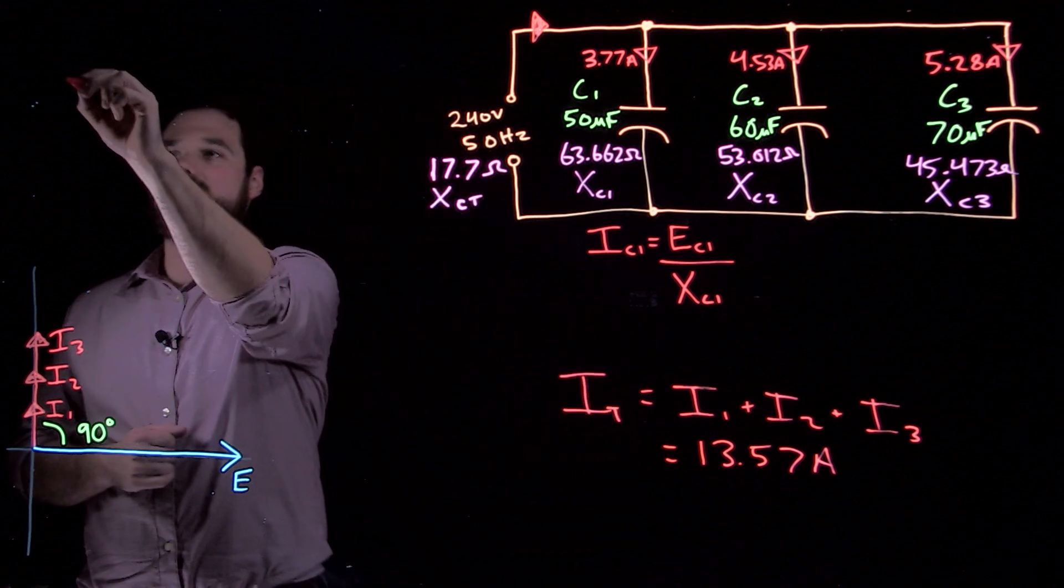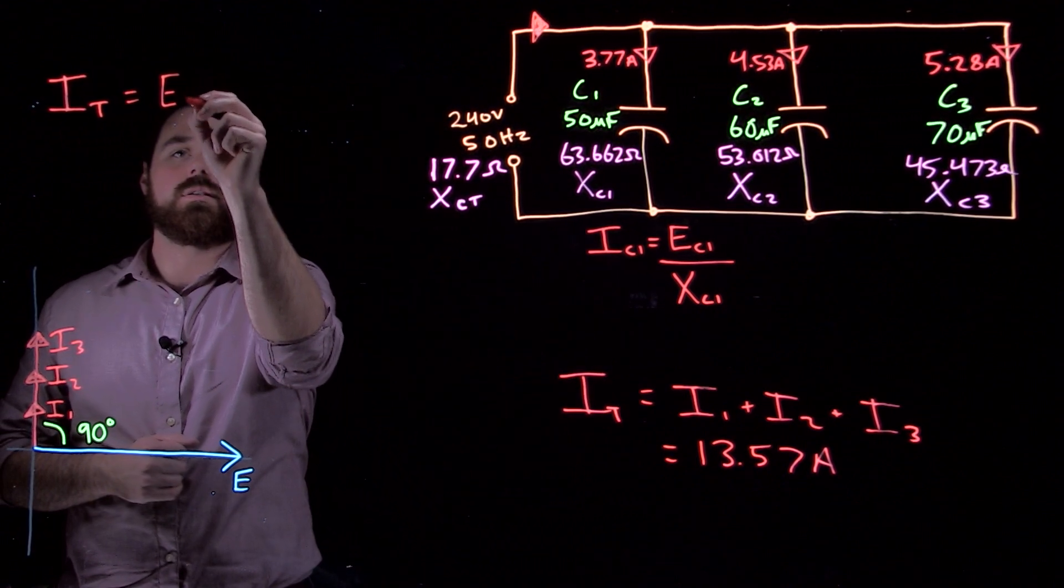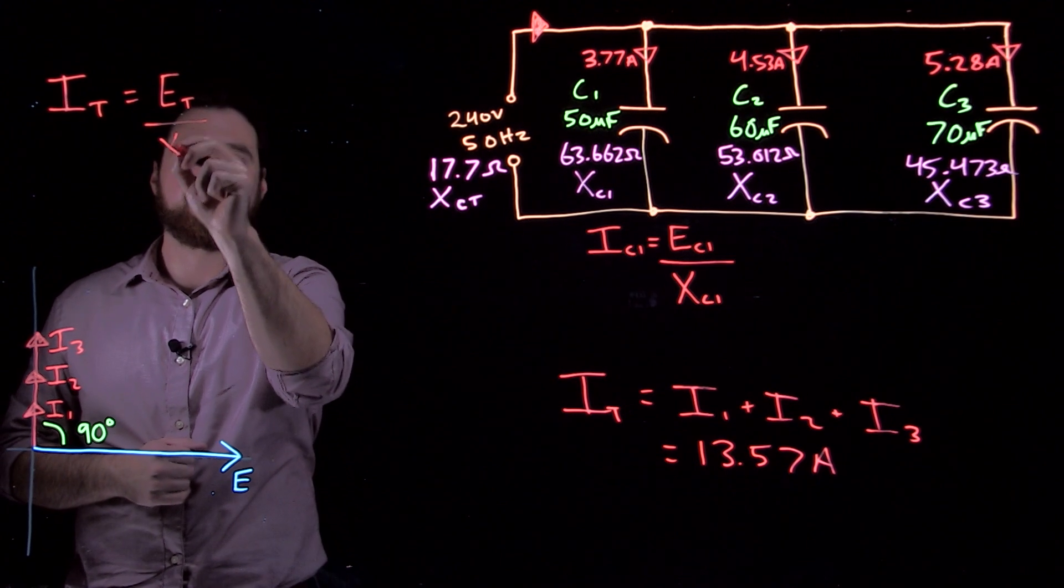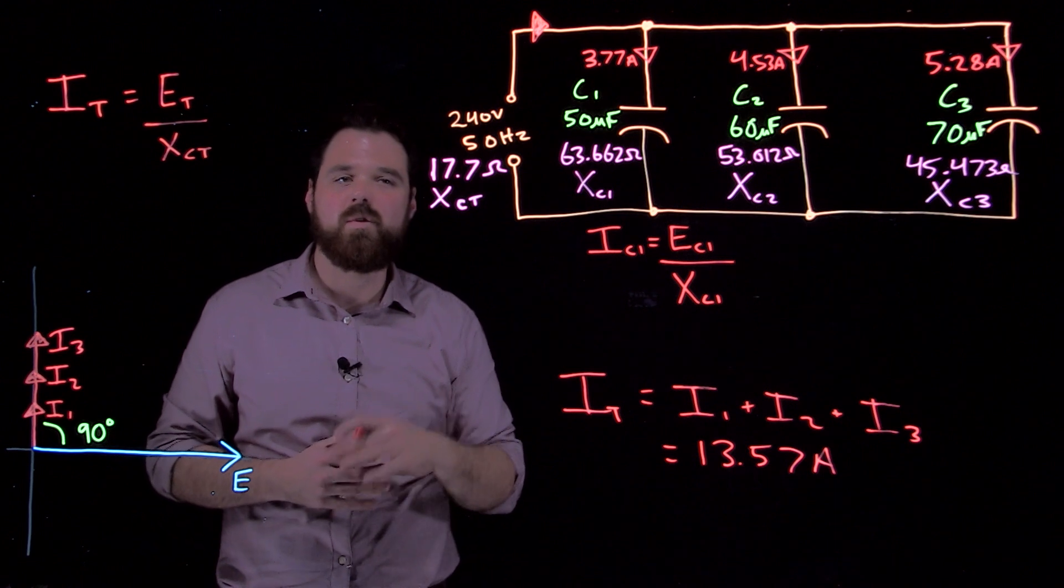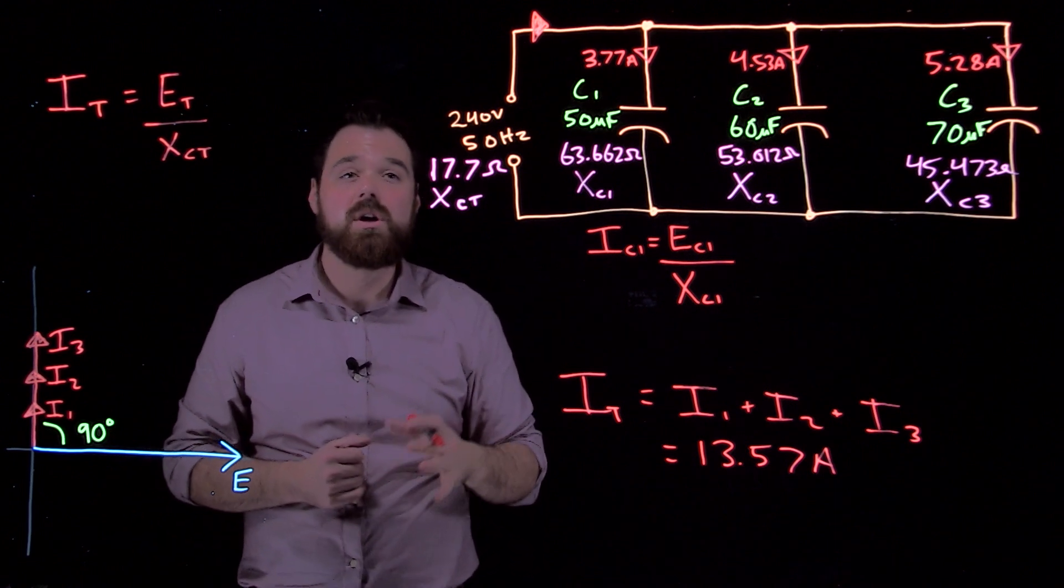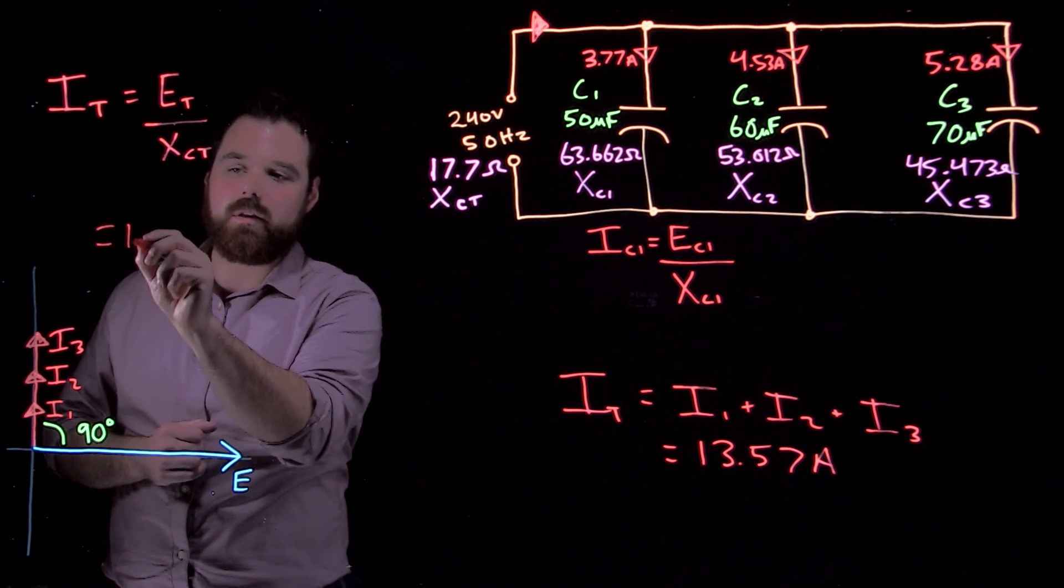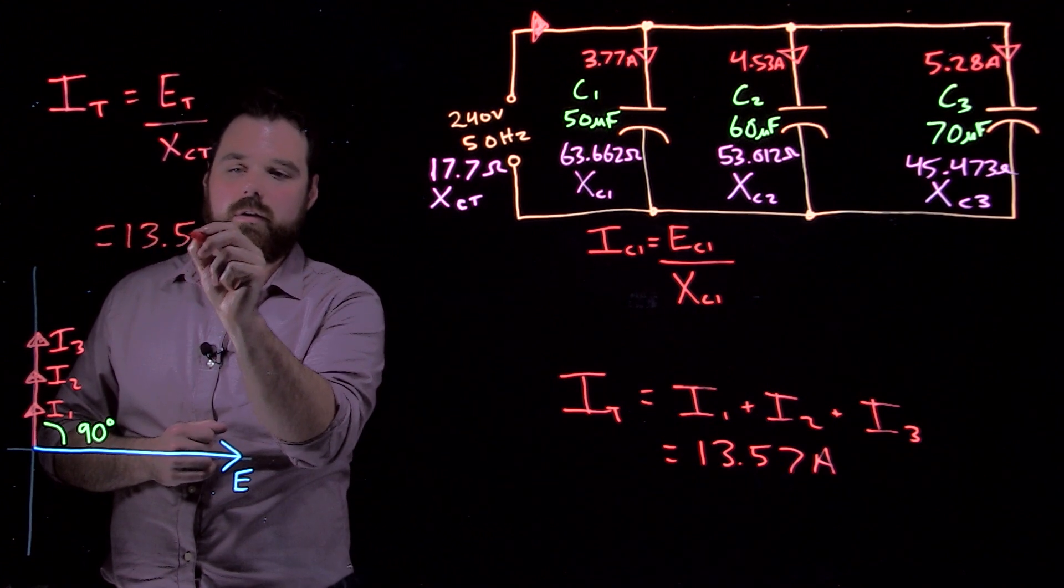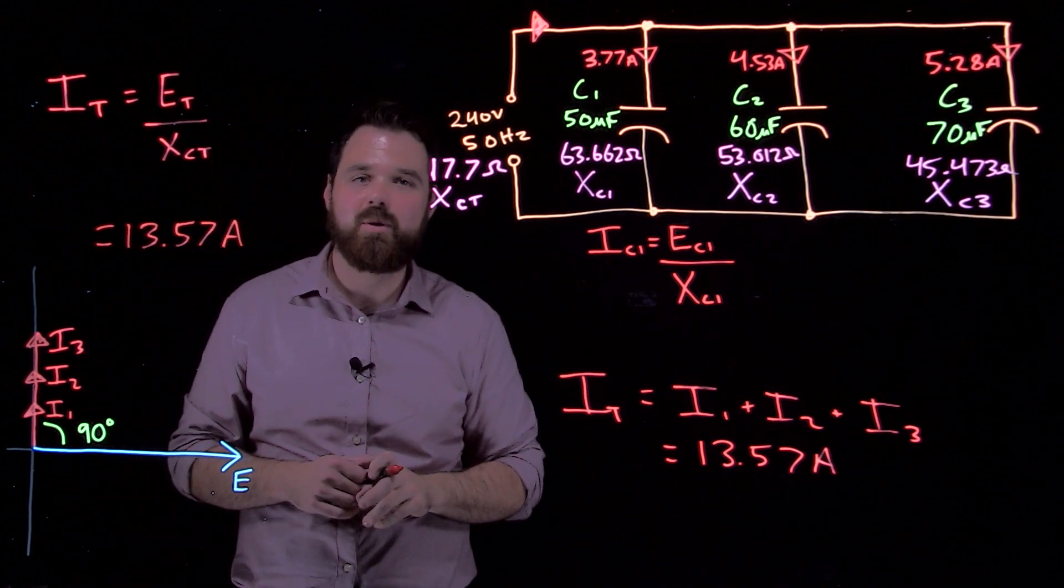I total equals E total over XC total. We know our XC total from before is 17.7 ohms. So we can do 240 volts divided by that, and we end up with the same number as before.